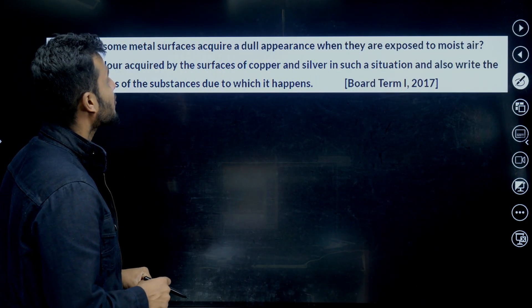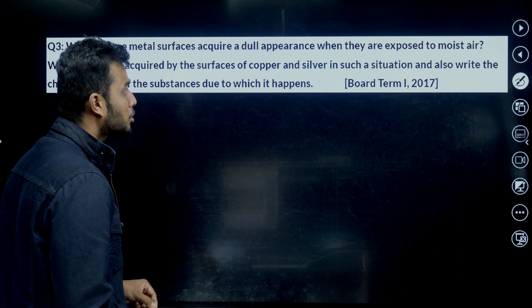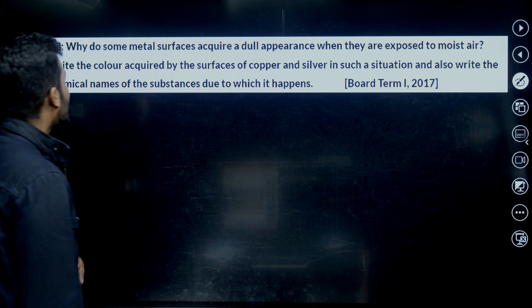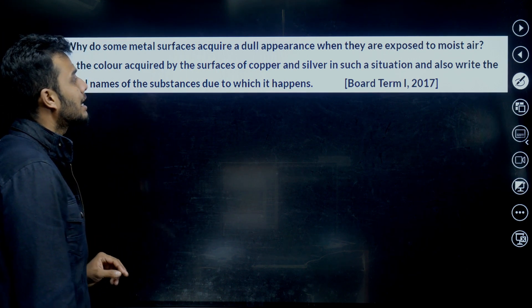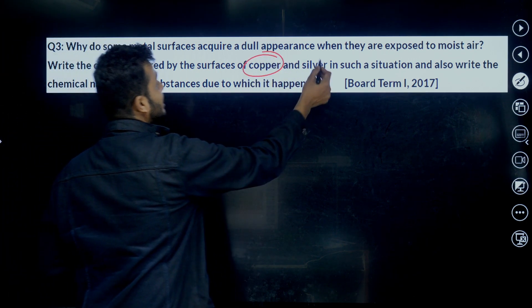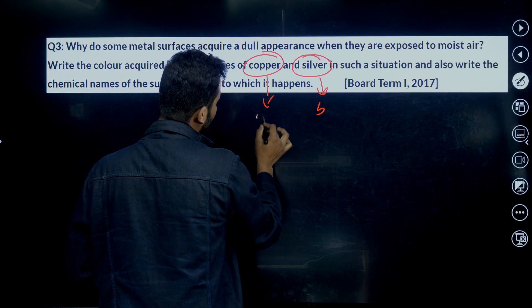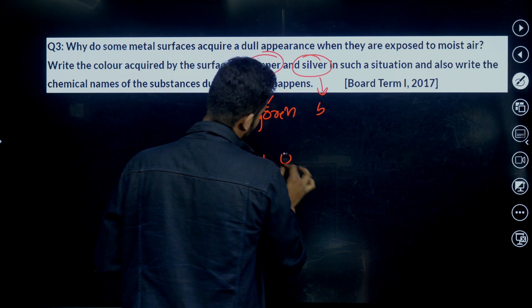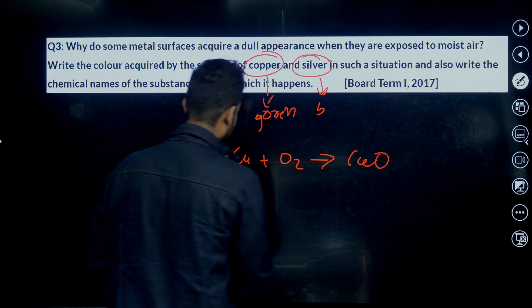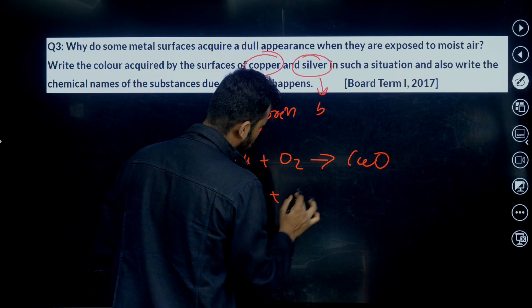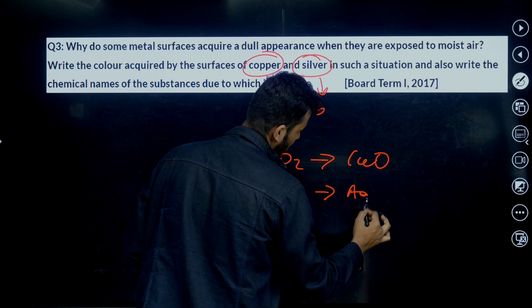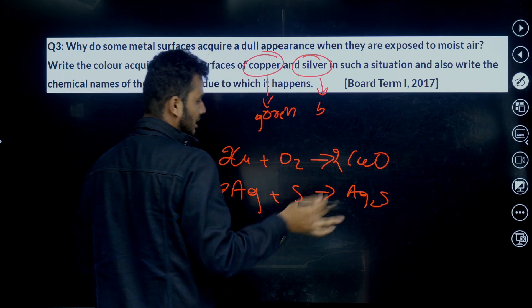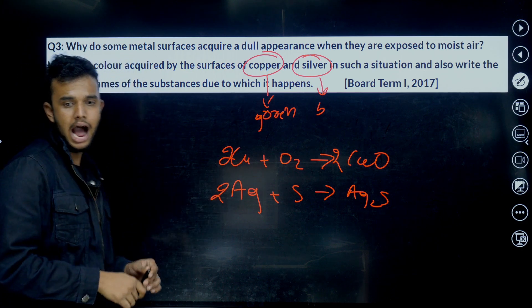Last question. Why do some metal surfaces acquire dull appearance when they are exposed to moist air? Because rusting is happening. Metals react with oxygen to form metal oxide. That's why. The color acquired by the surface of copper and silver. Copper, which color? Silver is black color. Copper is green color. Why? It forms copper oxide: Cu + O2 = CuO. What's about silver? Sulfide. 2Ag + S = Ag2S. That's all.